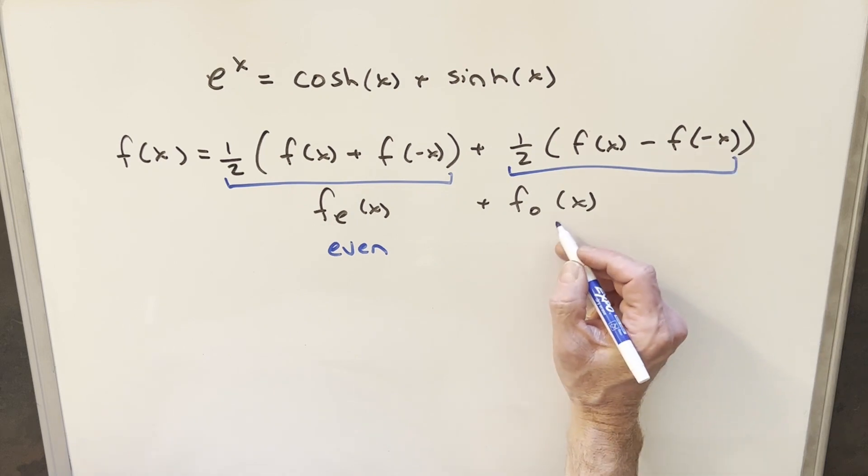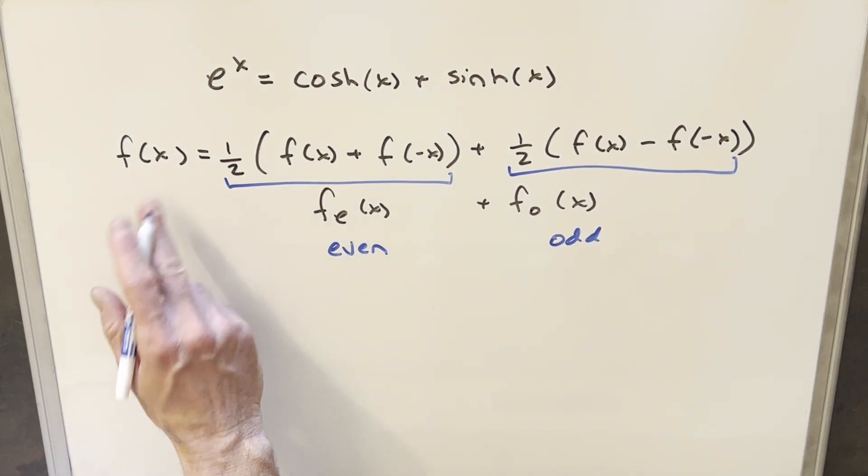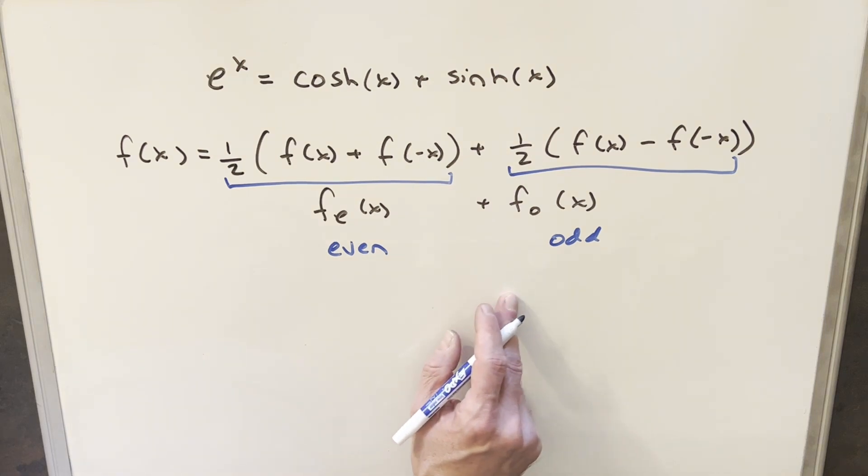and this part is going to be another function that's going to be odd. So we can take any function and break it up this way and get an even and odd part.